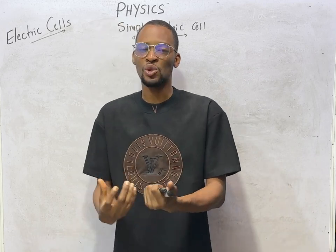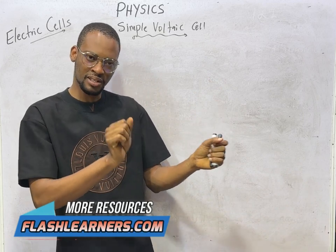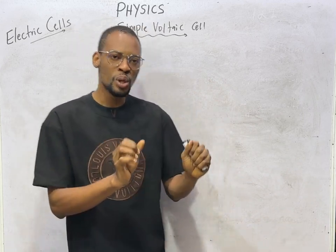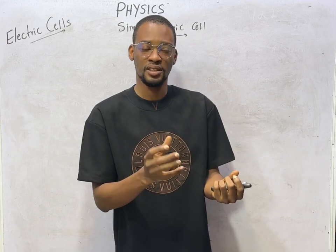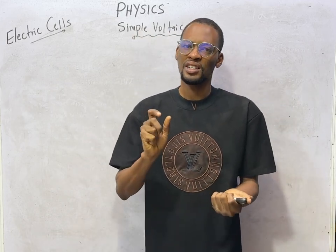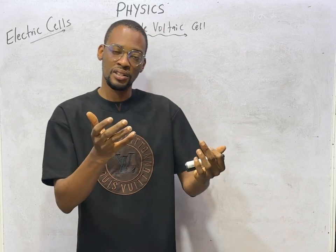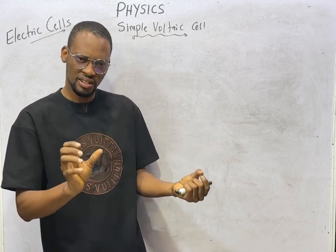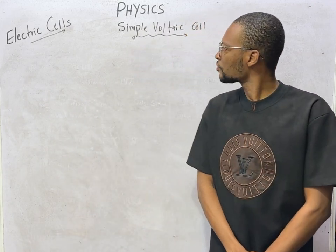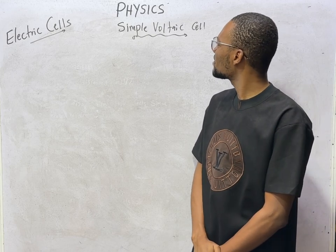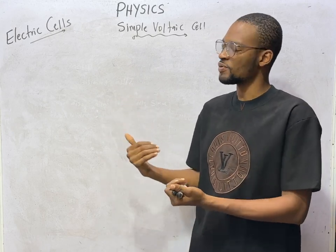I went further to explain that cells have positive and negative terminals, and they can be categorized into primary and secondary cells. I gave the difference and comparison between primary and secondary cells, and I promised to compare them. But this episode, let's focus on simple voltaic cells, and the next episode will cover primary and secondary cells.